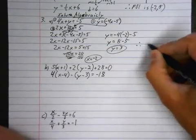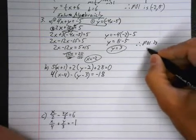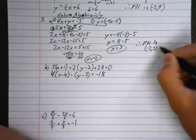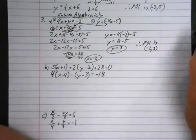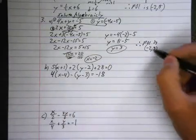I get 8 minus 5, y equals 3, and then you write, therefore, point of intersection is negative 2, 3. Or whatever statement your teacher makes you do. Maybe you have to say, the solution is negative 2, 3. I just make my kids do, therefore, POI is.